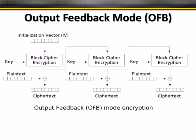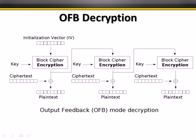Output Feedback Mode (OFB) is another mode. We start with an initialization vector, but this time we encrypt the initialization vector first, then combine the plain text with that ciphertext using XOR. The output from each block becomes the initialization vector for the next. This can be very fast since XOR is a simple operation, and only the initialization vector needs to go through full encryption the first time.